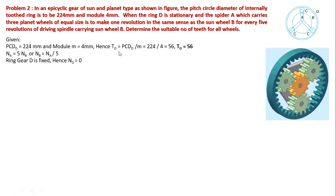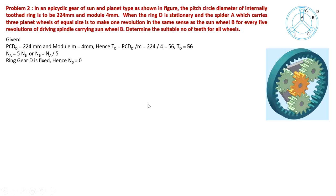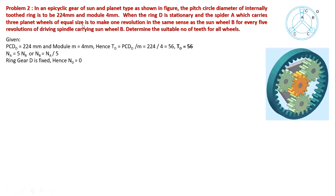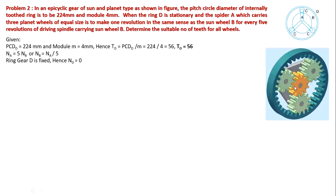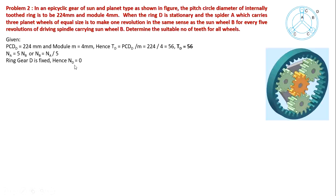We know that number of teeth equals pitch circle diameter divided by module. Therefore, number of teeth on D (TD) equals 224 divided by 4, which gives TD equals 56 teeth. The conditions are: ring D is stationary (ND equals 0), and the spider A makes 1 revolution for every 5 revolutions of sun wheel B, so NA equals 5 times NB, or NB equals NA divided by 5.